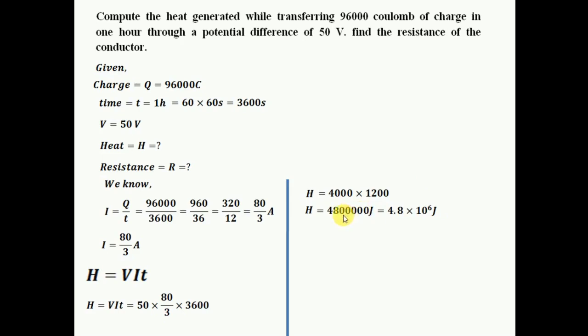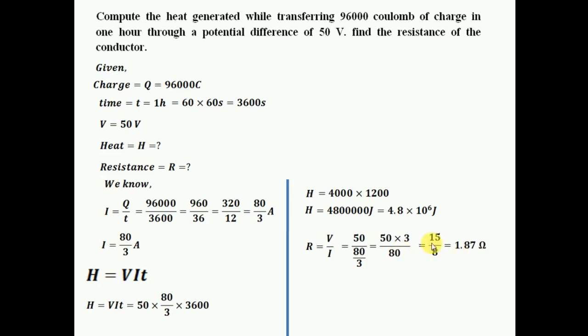Now I also need to find the resistance. Using Ohm's law, V equals IR, so R equals V by I. Substituting: V is 50 and I is 80 by 3, so R equals 50 times 3 divided by 80, which is 150 by 80. Simplifying by cancelling zeros gives 15 by 8, which equals 1.875 ohms. So the resistance is approximately 1.87 ohms.